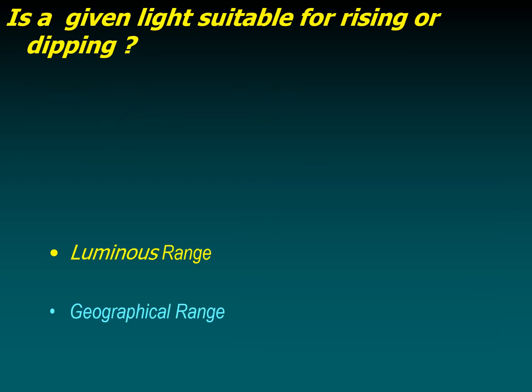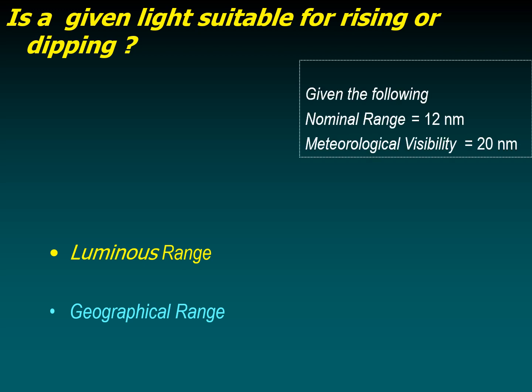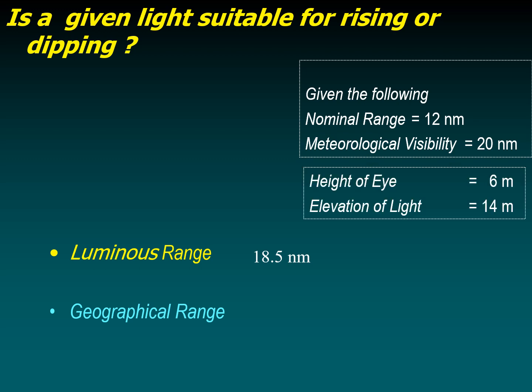So how do you determine if a given light is suitable for rising or dipping? Given a nominal range of 12 nautical miles and a meteorological visibility of 20 nautical miles, the luminous range will be about 18.5 nautical miles as determined before, and the geographical range — using a height of eye of 6 meters and elevation of light of 14 meters — will be about 12.6 nautical miles.